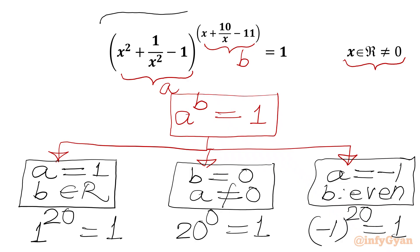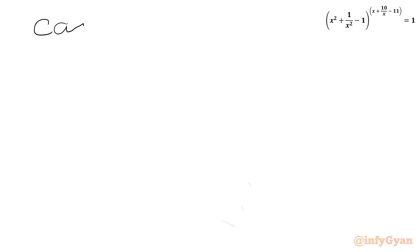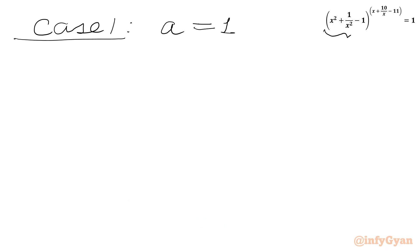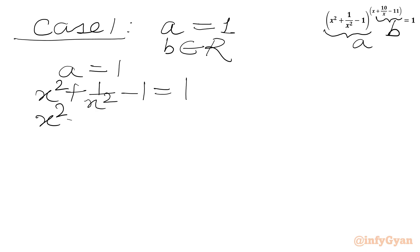So we have to consider our equation under these 3 cases: case 1, case 2, and case 3. For case 1, we consider base a equal to 1, where our base is x² + 1 over x² − 1. Setting this equal to 1 and taking all terms to one side, we write x² + 1 over x² − 2 equal to 0.